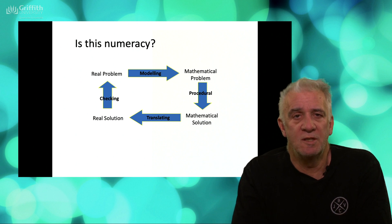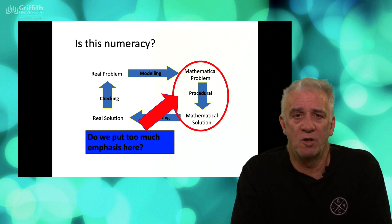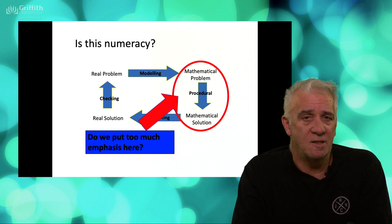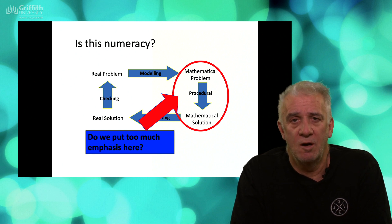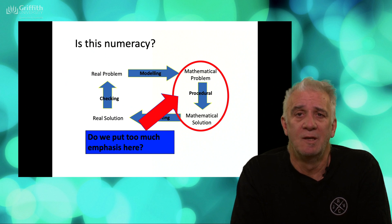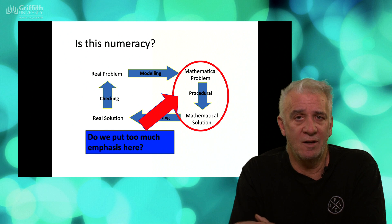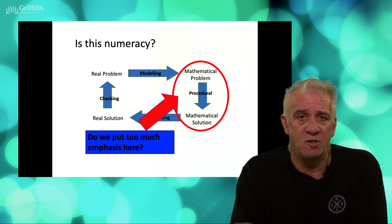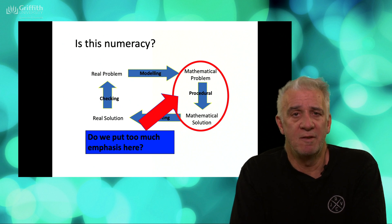In a simplified version this could be a way of understanding numeracy, but the interesting thing is that at school we spend most of our time just doing the procedural part — finding a mathematical solution. Just because someone is good at solving mathematical problems with procedural knowledge doesn't mean they're numerate. With technology, the procedural calculation part is probably the easiest part now. Back in the day it was more important because we didn't have calculators and computers, but nowadays technology can handle the actual calculations. The hard part is turning a real problem into a math problem and then translating it back.